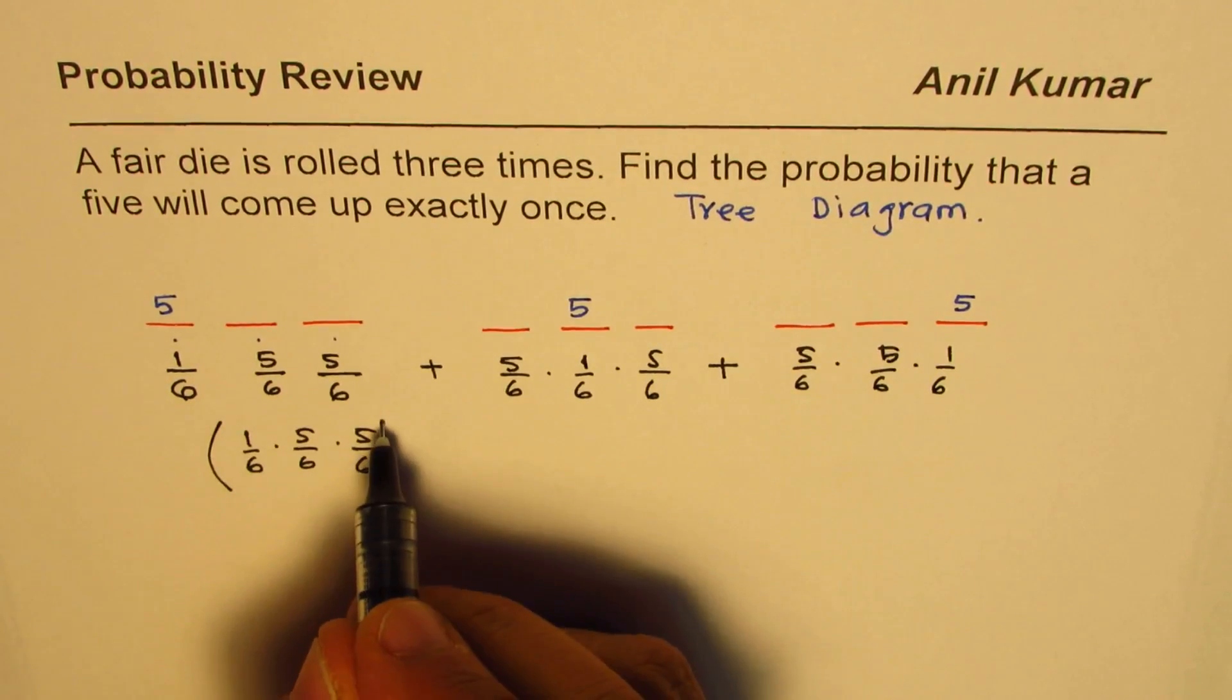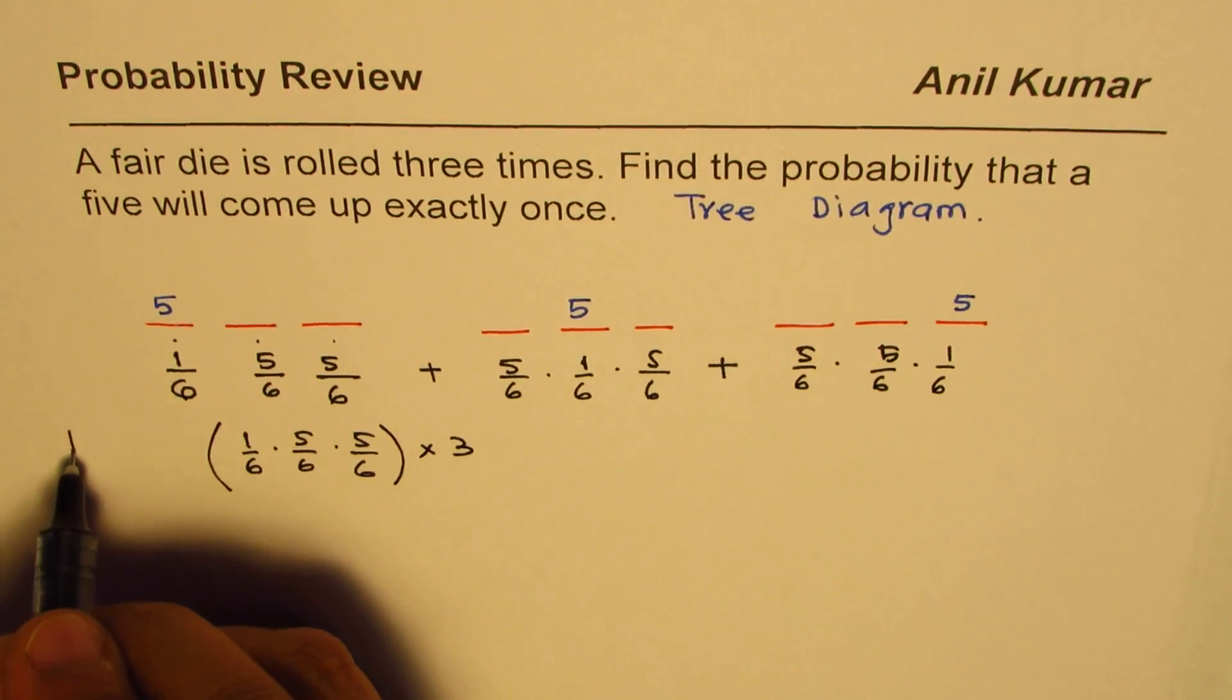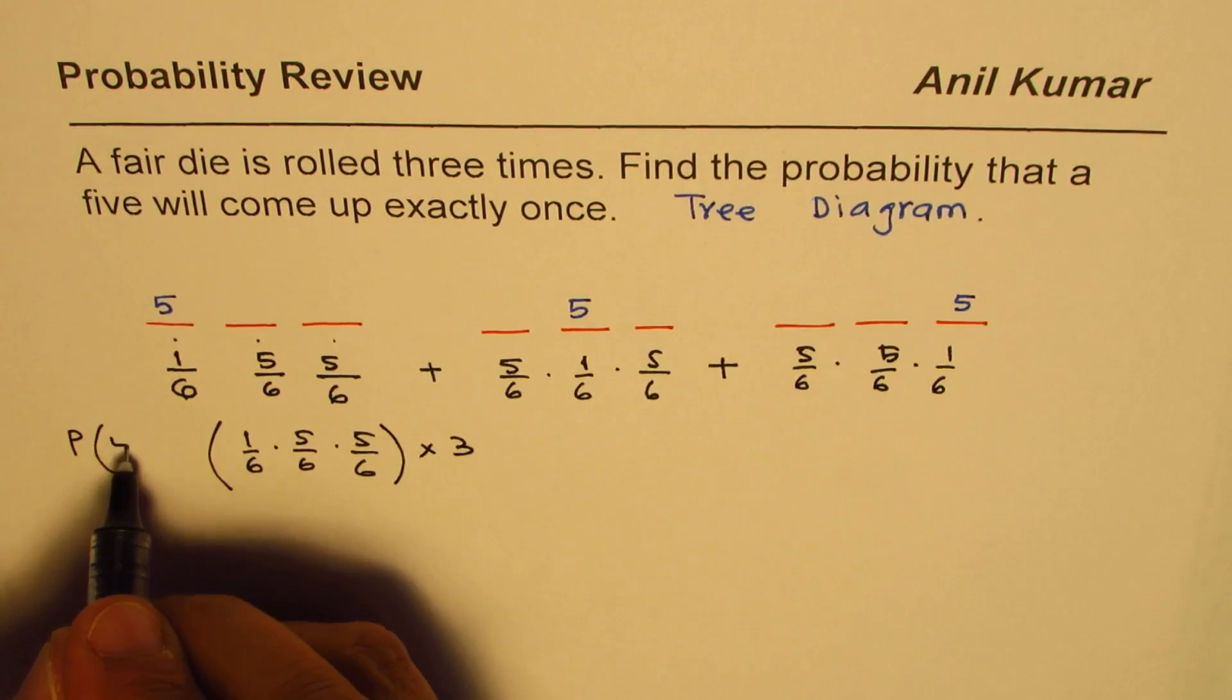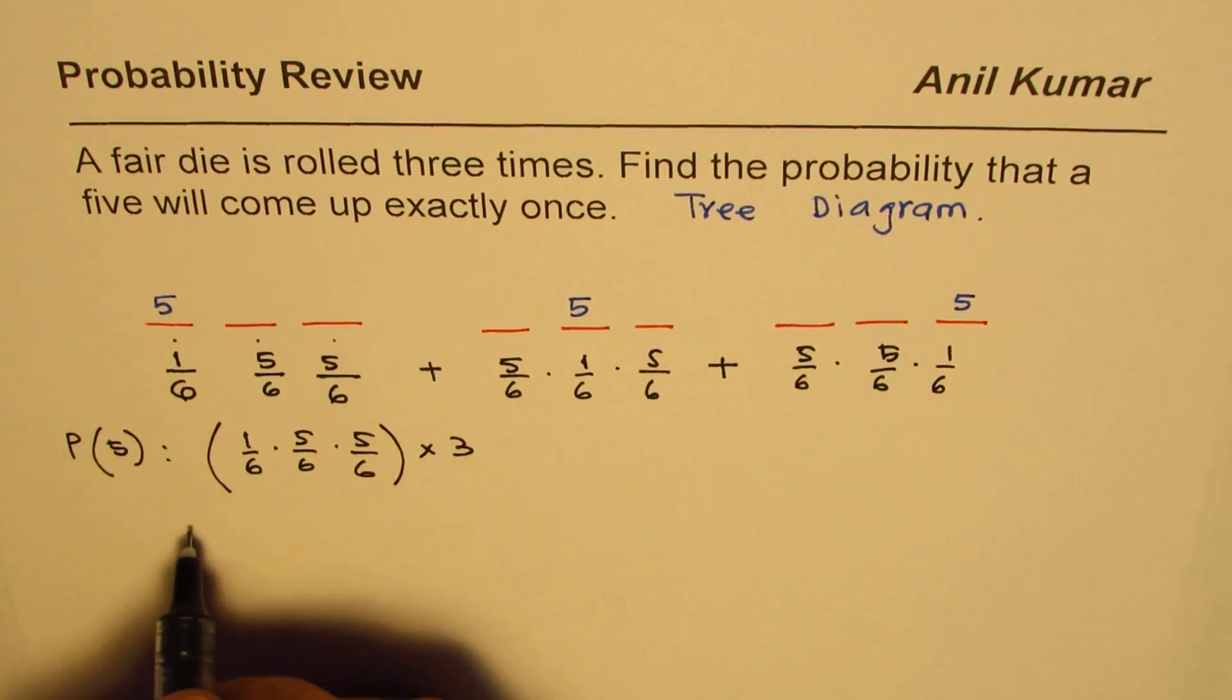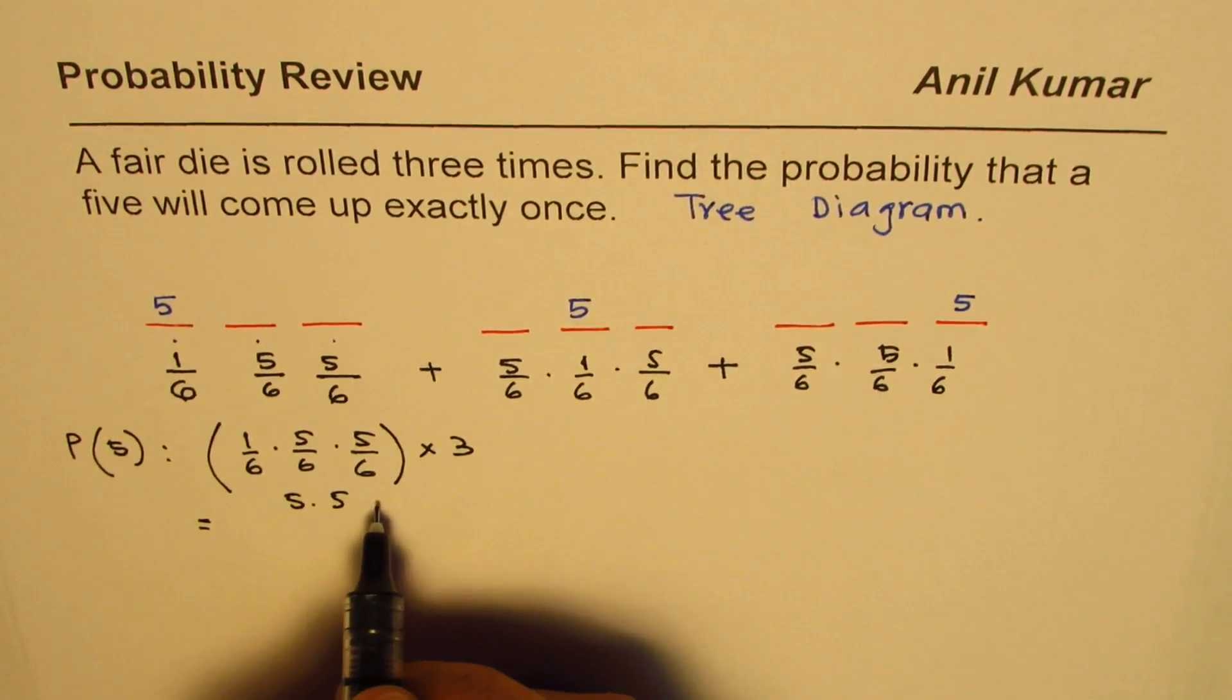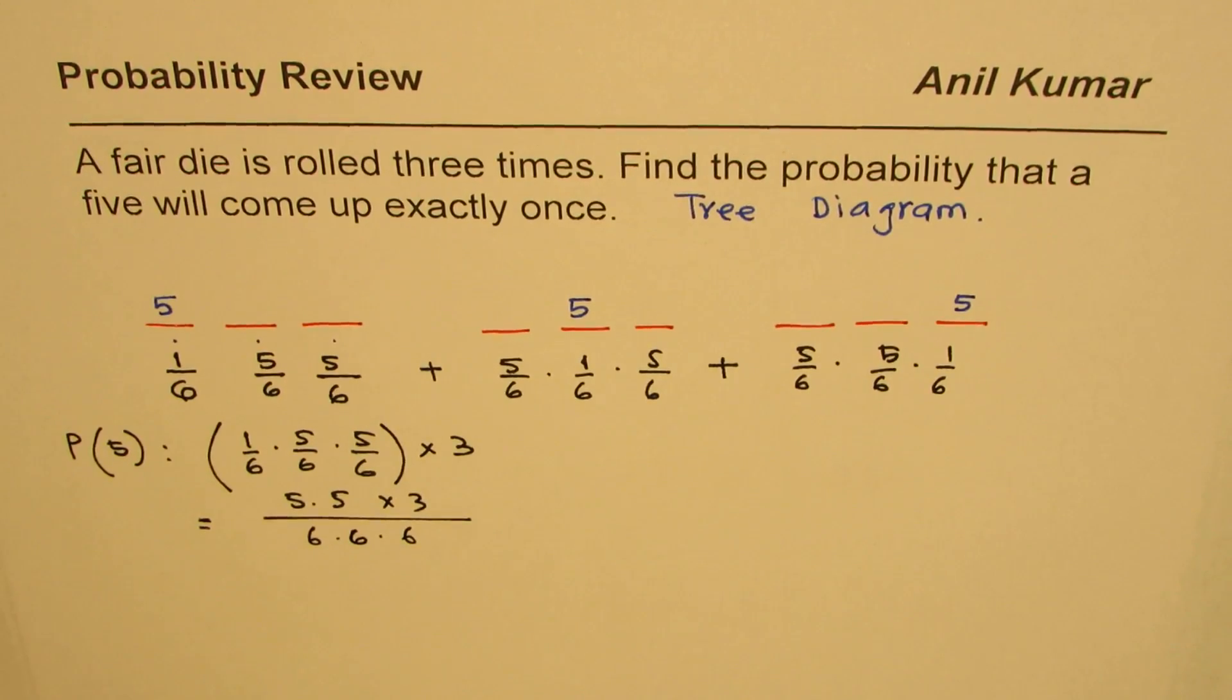So that becomes the probability for getting one five, just five in three dice. So if you calculate this, it becomes five times five times three over six times six times six. We could simplify this.